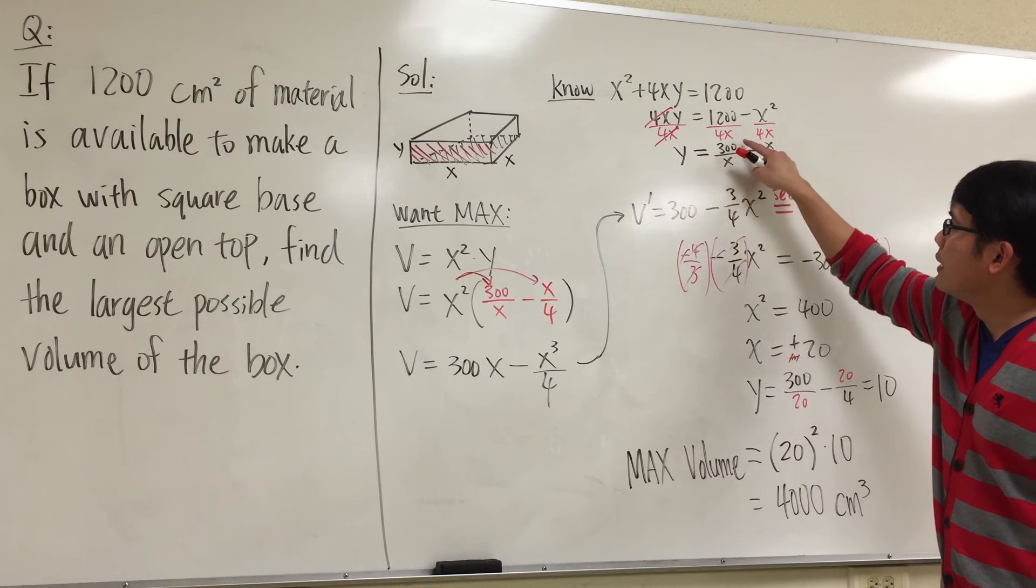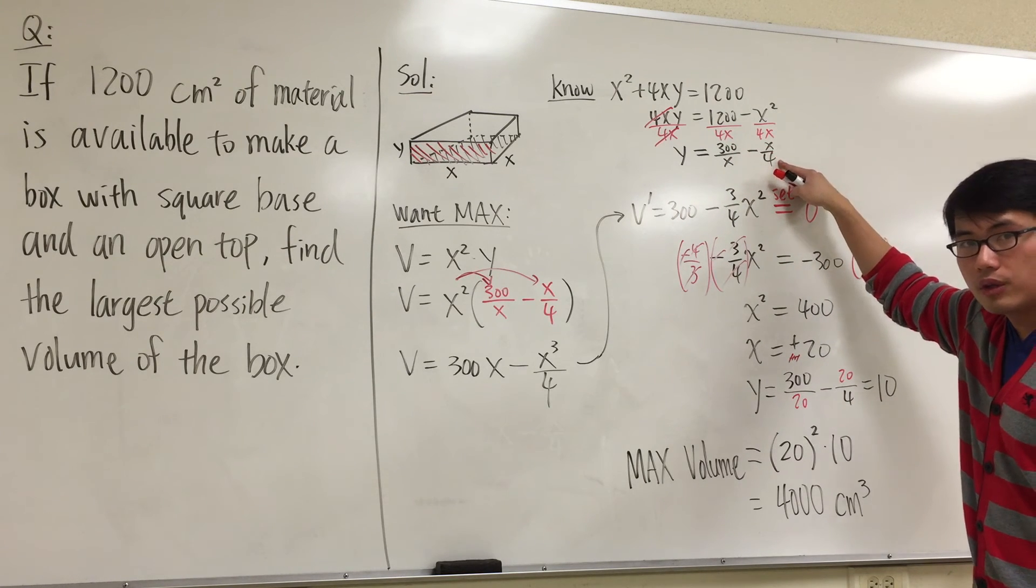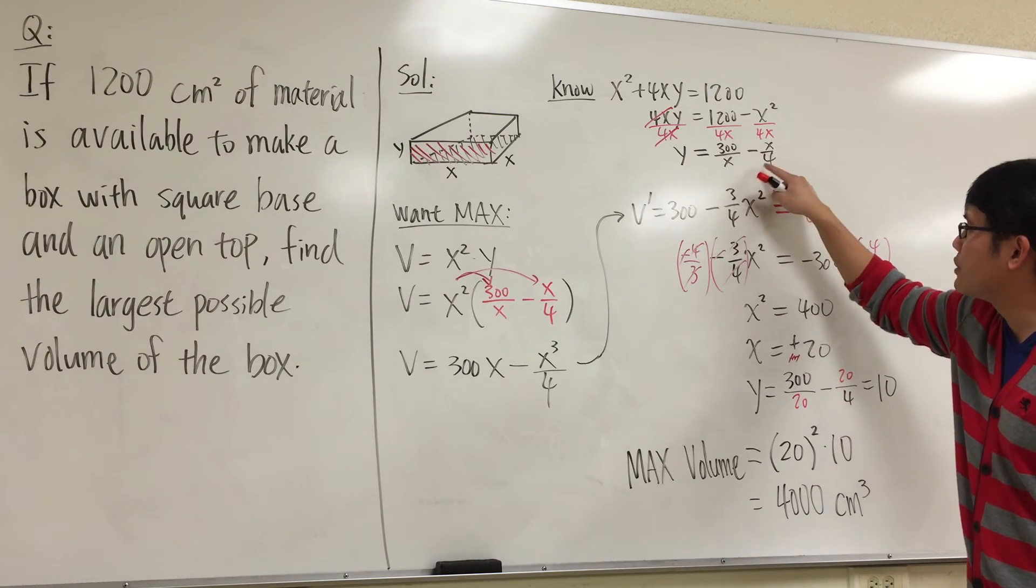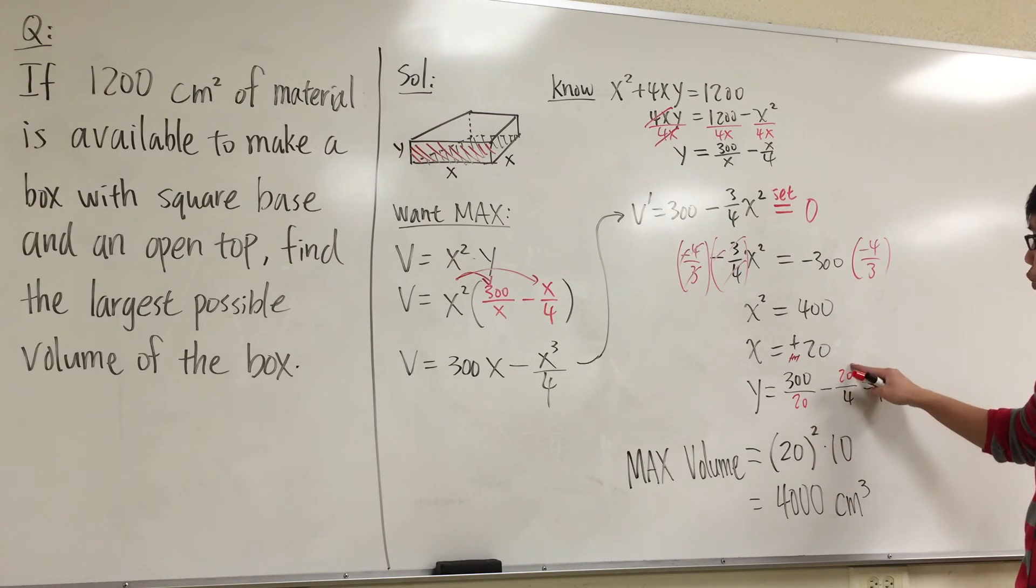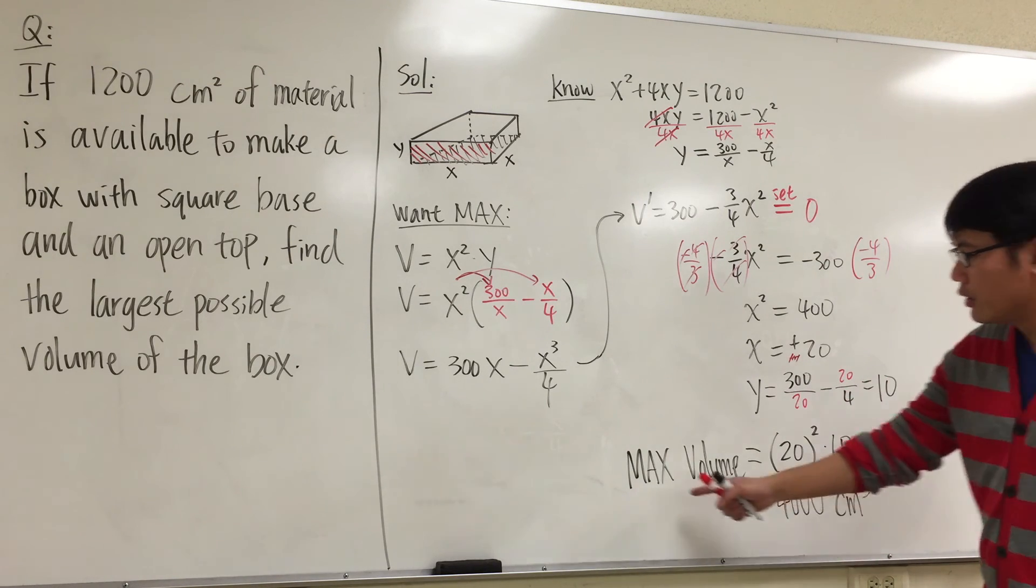Remember y = 300/x - x/4. So I just need to plug in 20 into this equation. So I get 300/20 - 20/4. And do the computation. This is 15 - 5. You will get 10 for the y.